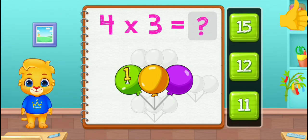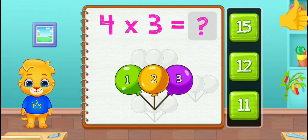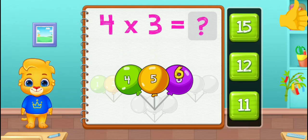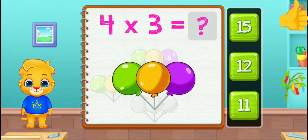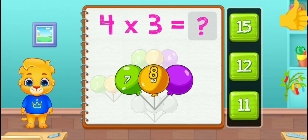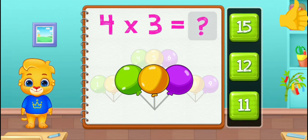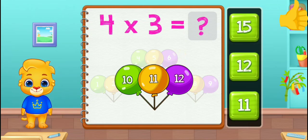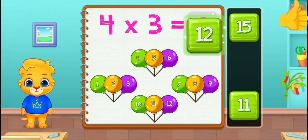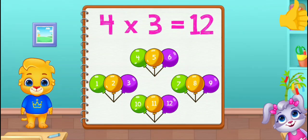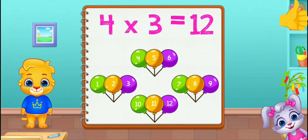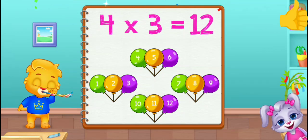One, two, three, four, five, six, seven, eight, nine, ten, eleven, twelve. Four times three equals twelve.